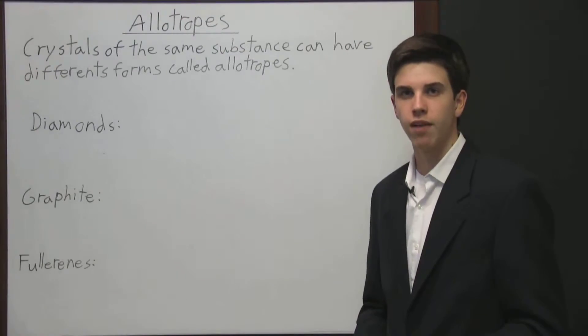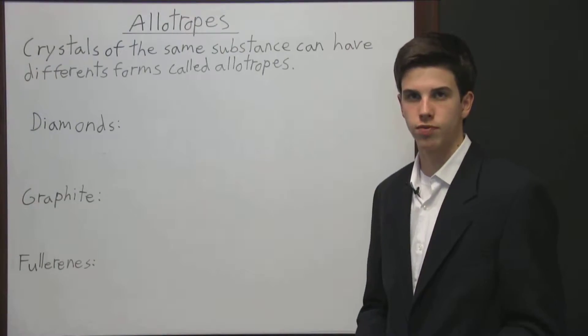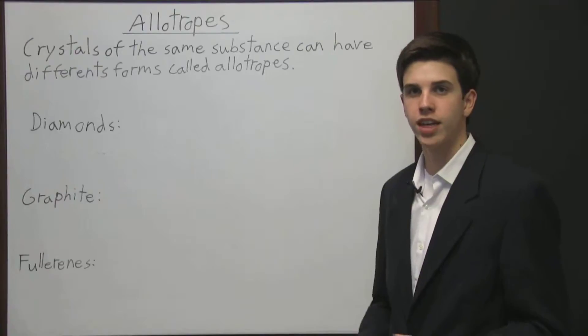Crystals of the same substance can have many different forms called allotropes. For example, carbon has many different allotropes.